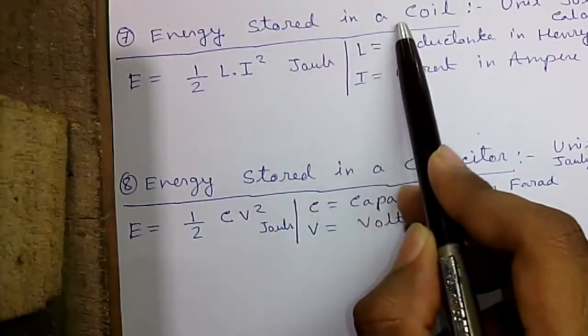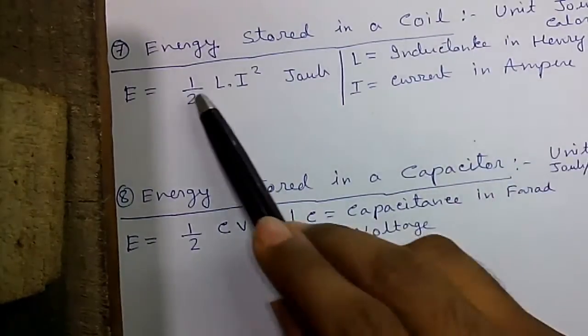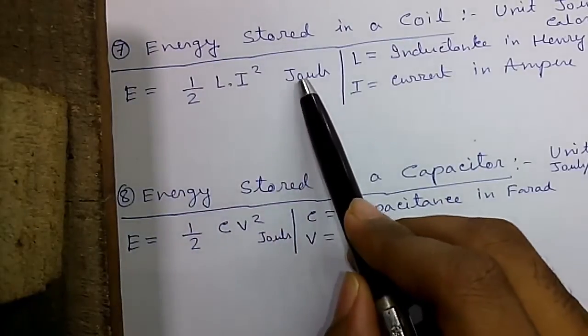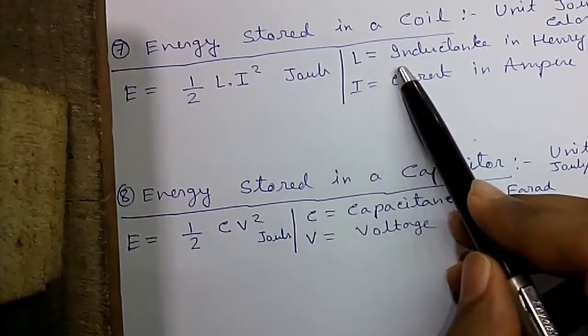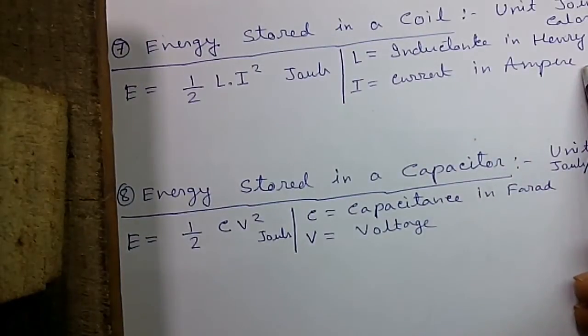Formula seven, energy stored in a coil, unit of energy is joule or calorie. So E equals to half into Li square joules, where L is the inductance in Henry and I is the current in amperes through the coil.